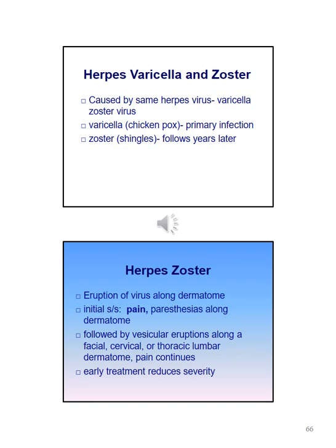Herpes, varicella, and zoster are caused by the same varicella zoster virus. Varicella is known as chickenpox; herpes is a primary infection and zoster, known as shingles, follows years later. Herpes zoster is an eruption of the virus along the dermatome. Initial signs and symptoms include pain and paresthesias along the dermatome, usually followed by vesicular eruptions along a facial, cervical, or thoracic lumbar dermatome. Early treatment reduces severity.